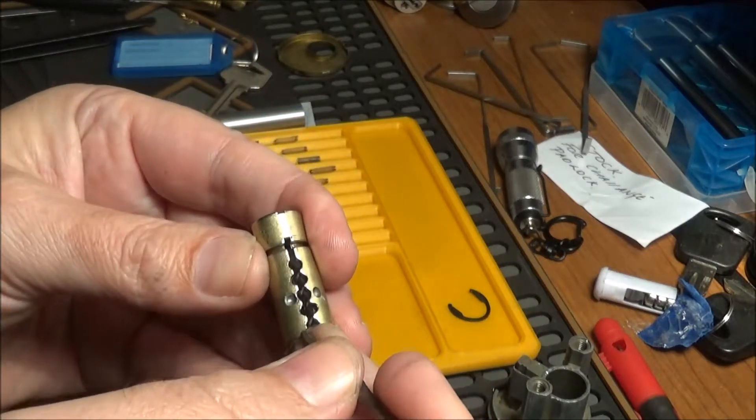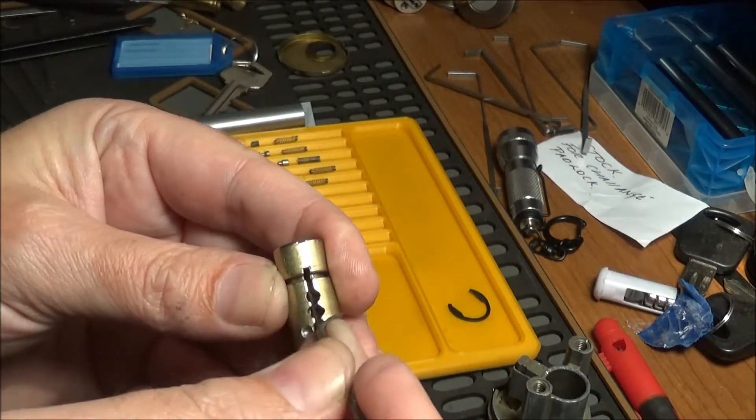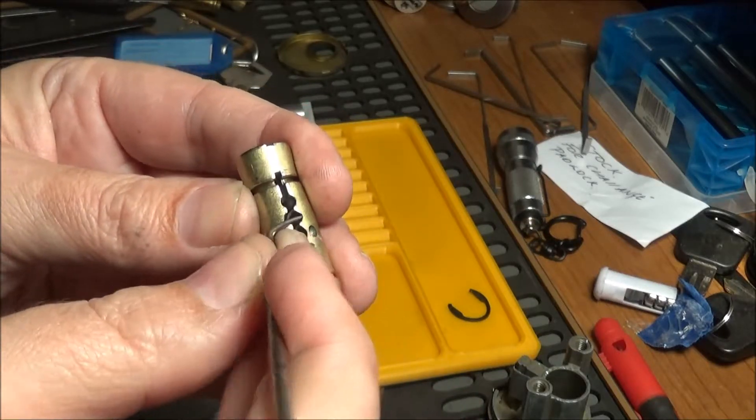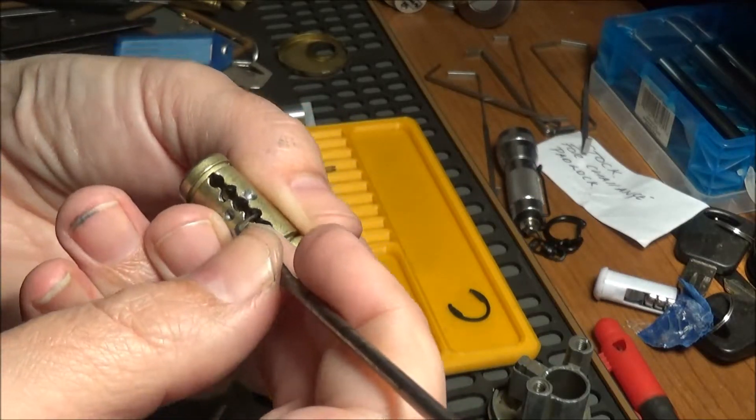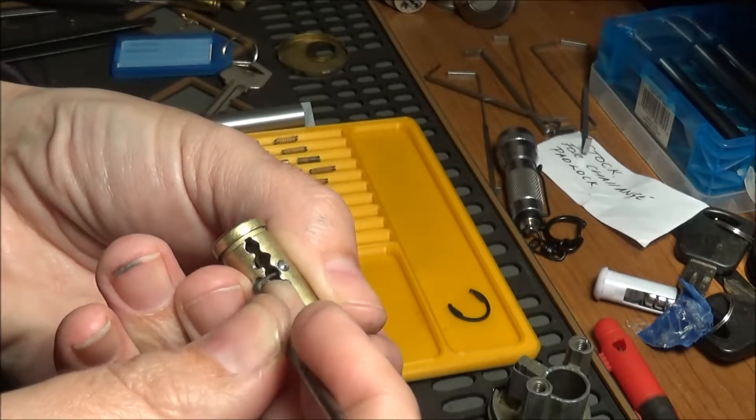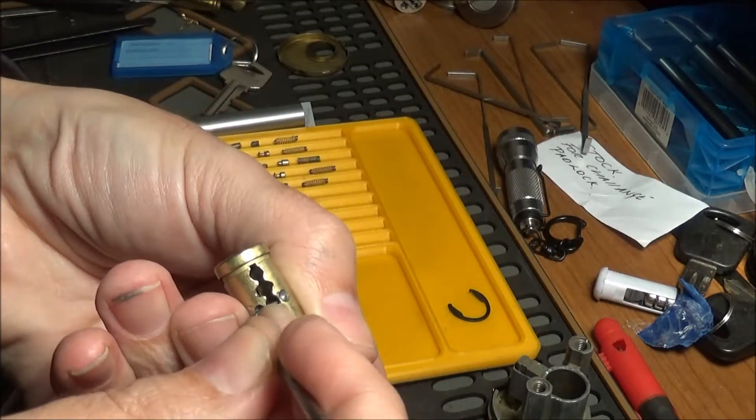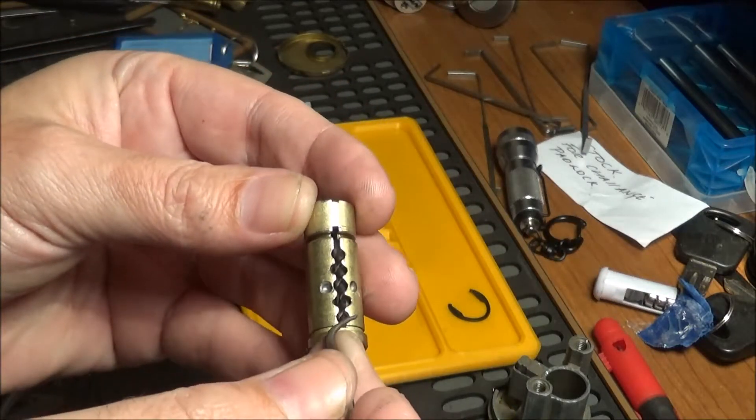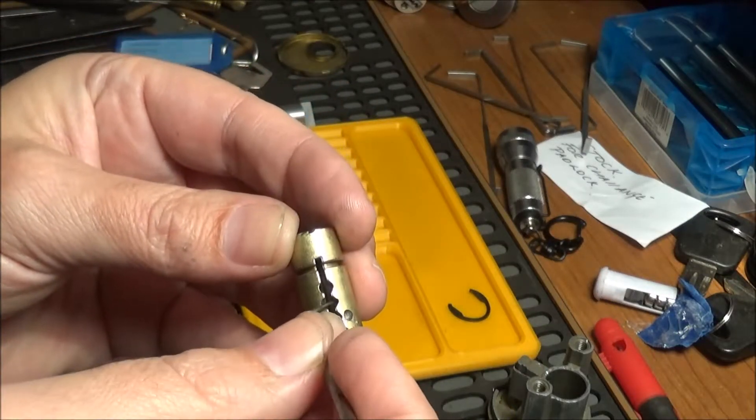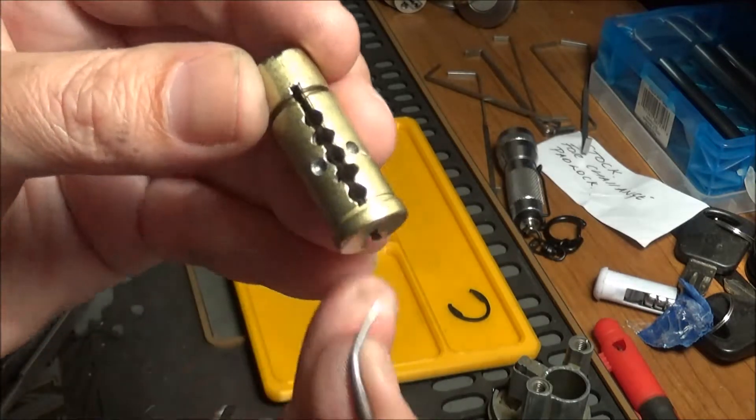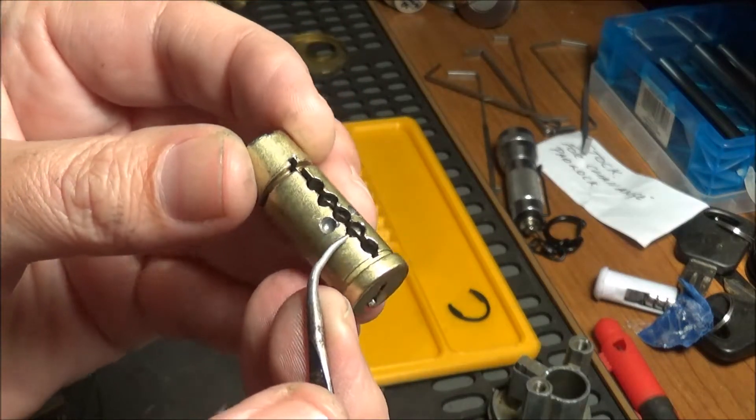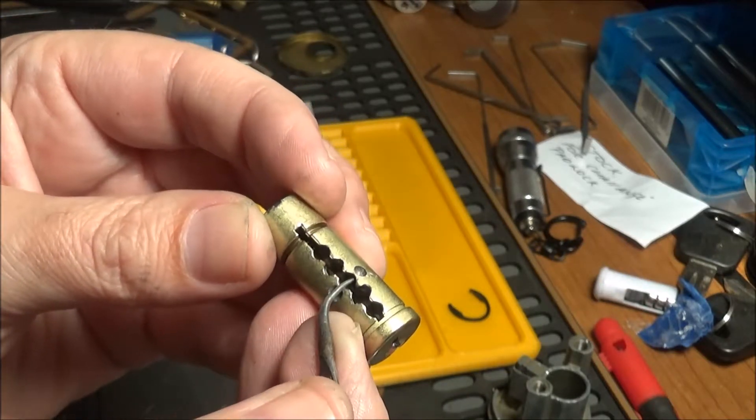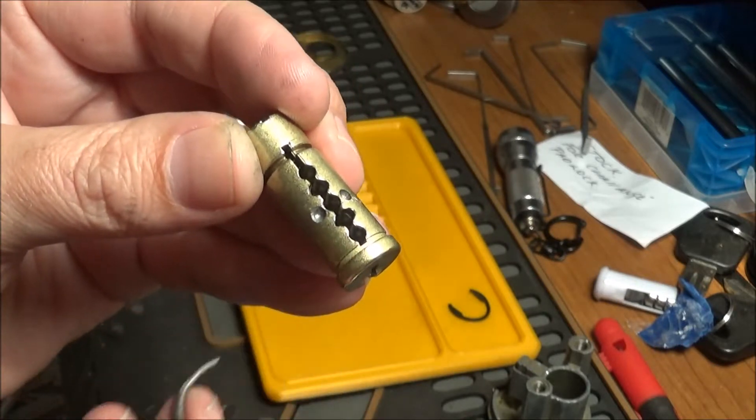No threading, but I can see some definite undercuts in number two and four. Maybe, okay, two, three, and four. Two, three, and four's got undercuts in them. Two and four are really wide, and then three I can feel it grabbing on three, so I'd say two, three, and four.